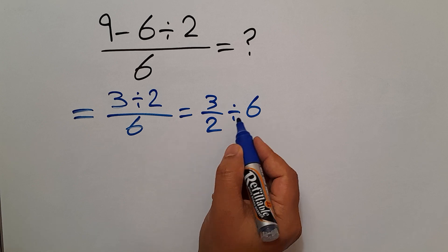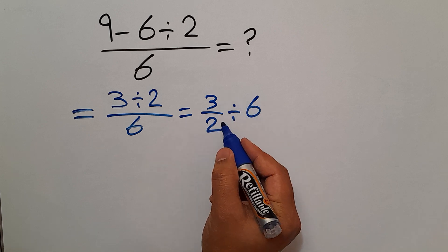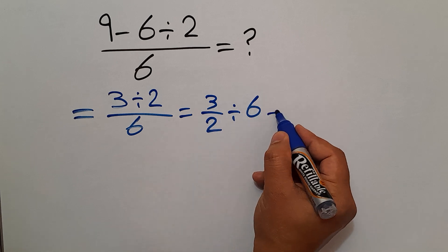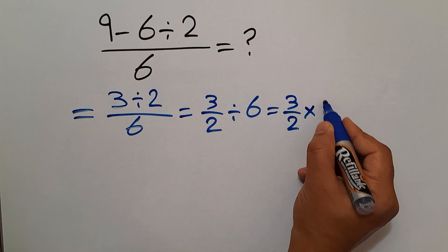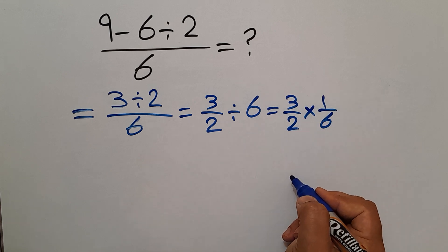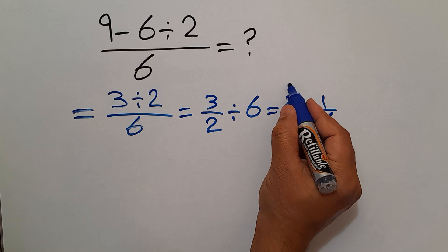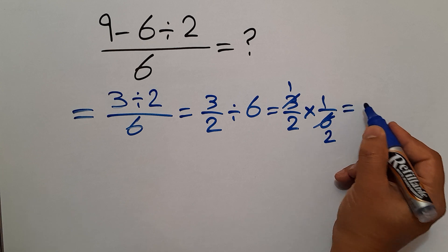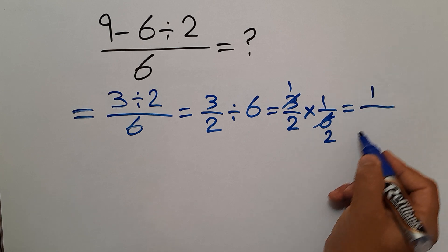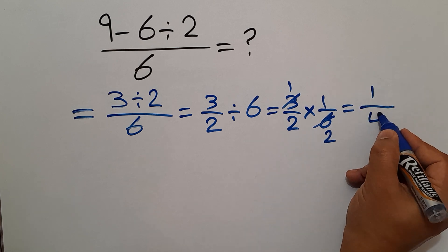And according to the KCF rule, 3 over 2 divided by 6 can be written as 3 over 2 times 1 over 6. 3 divided by 3 equals 1 and 6 divided by 3 equals 2. So finally we have 1 over 2 times 2 which equals 4.